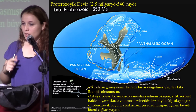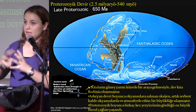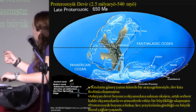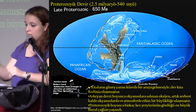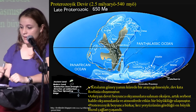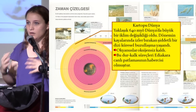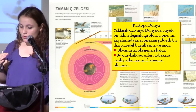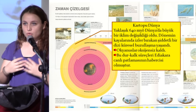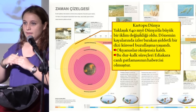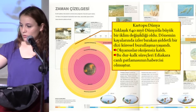Daha sonra Proterozoik dönem: 2.5 milyar ile 540 milyon yıl öncesini kapsayan oldukça uzun bu dönemde kıtaların birçok kez ayrılıp tekrar birleştiğini görüyoruz. Bu dönemde okyanuslarda serbest hâle gelen oksijen atmosferde birikmektedir. 'Kartopu Dünya' denen buzlu dönemler bu dönemdedir; okyanuslardaki buz nedeniyle fotosentez yapamayan fitoplanktonlar ölünce okyanuslar oksijensiz kalmaktadır. Biyolojik etkinlikler ancak kısa geçiş dönemlerinde hayat bulmakta ve bu süreç Ediyakara canlı patlamasının habercisi olmaktadır.